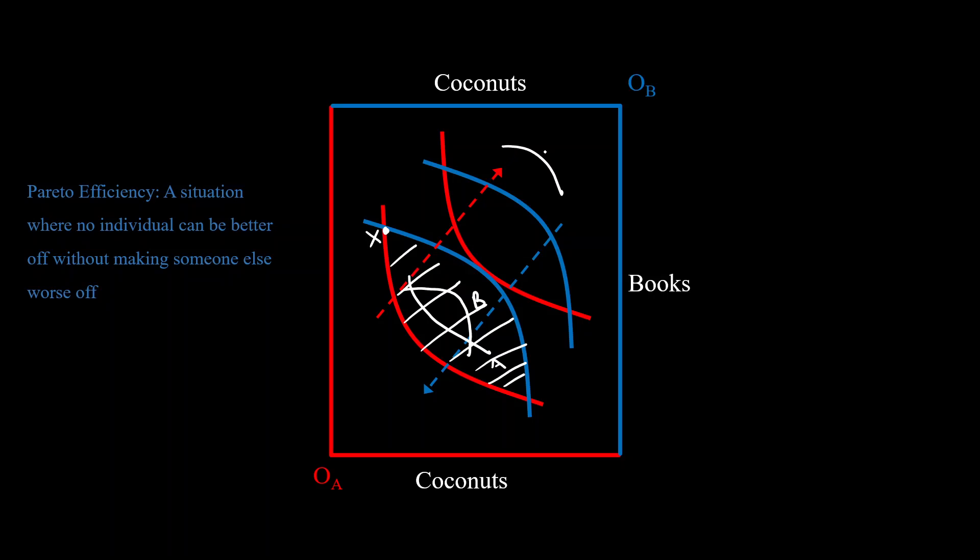So it will look something like this. Let's assume they are tangential at this point. Now, if any of these want to get better off, that means they'll have to move in the opposite direction, right? And that will definitely make the other one worse off. So these type of points will be Pareto efficient.